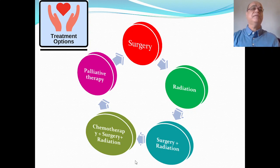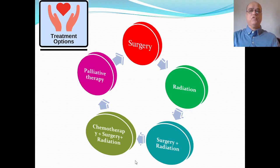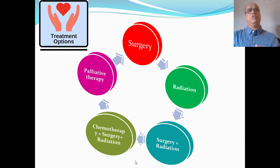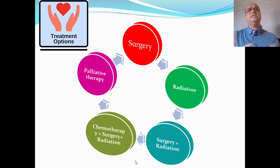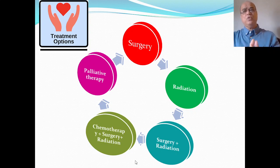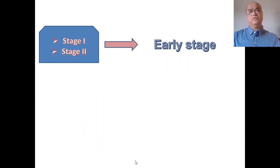We have to plan a treatment strategy for the individual patient according to their general health status. For example, surgery may be a good option for one tumor, but if the patient is not fit for surgery due to ill health or associated diseases like diabetes, renal problems, or liver problems, we have to think about a second option. The treatment plan depends upon the site and size of the tumor, general health status, and expertise available.